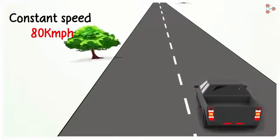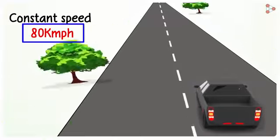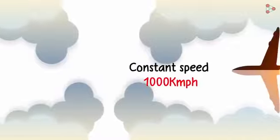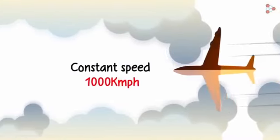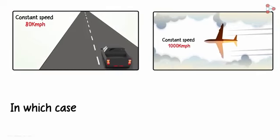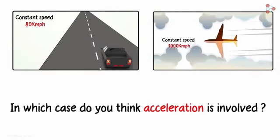In the first one, a car is traveling in a straight line at a constant speed of 80 kilometers an hour. And in the second one, a plane is traveling in a straight line at a constant speed of 1000 kilometers an hour. In which case do you think acceleration is involved?